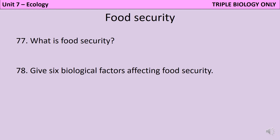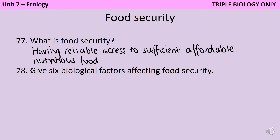Food security can be described as having reliable access to enough affordable, nutritious food to be able to feed your family. It can be compromised by a wide variety of biological factors. Firstly, there's the world's growing population — even though the birth rate has decreased in recent years, it's still higher than two children per woman on average, meaning the world population is still growing and it's increasingly challenging to feed everybody.